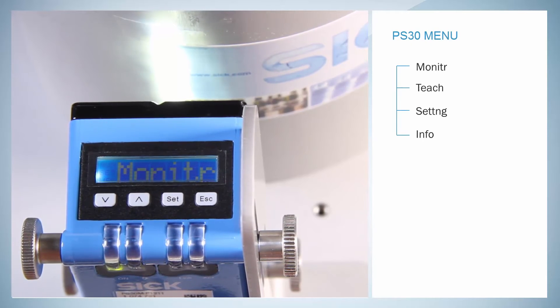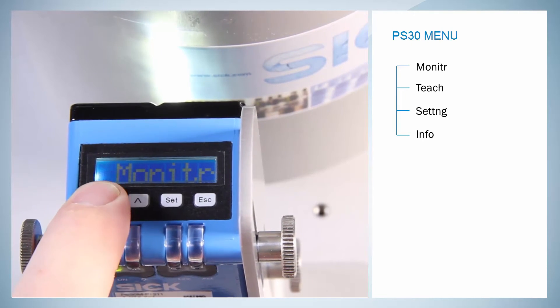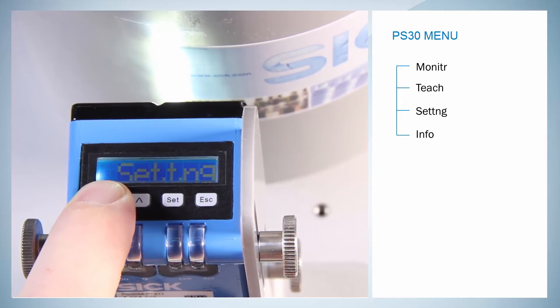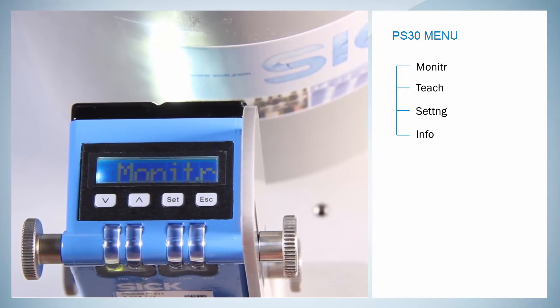On the first level of the menu, there are four different items: Monitoring, Teach-in, Setting and Device Info. There is a separate tutorial which demonstrates and explains the Teach-in item.